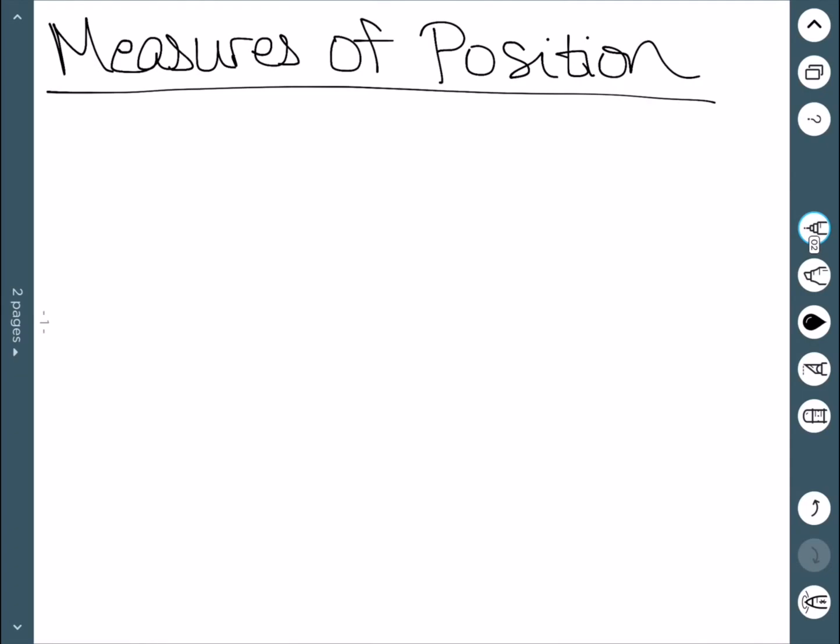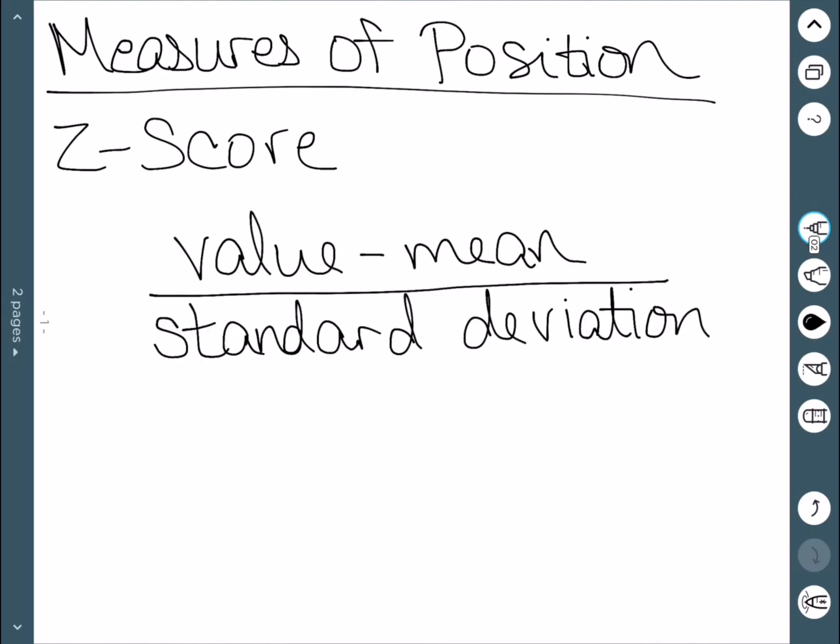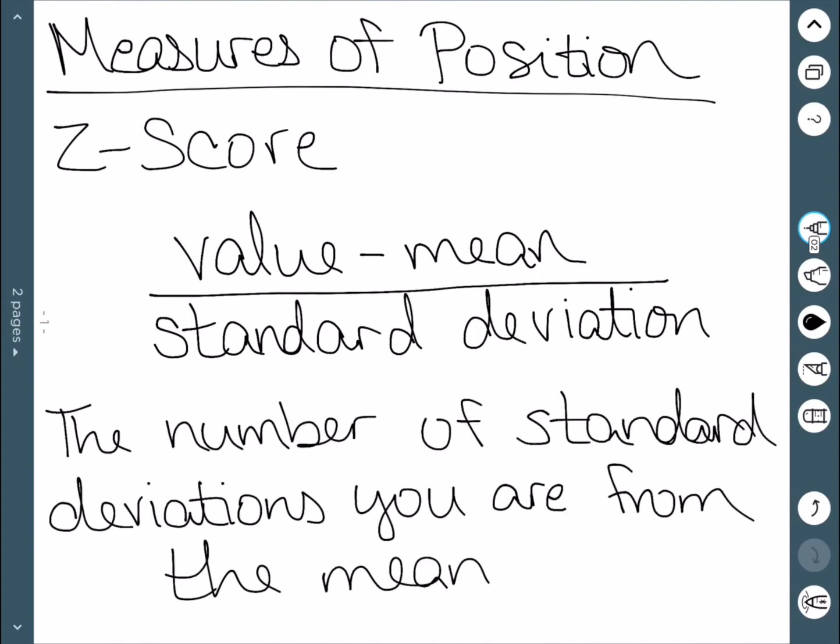The first is called the z-score. The z-score tells us how far we are away from the mean. The formula for finding a z-score is to take your value, subtract your mean, and divide by the standard deviation. The z-score represents the number of standard deviations you are away from the mean.